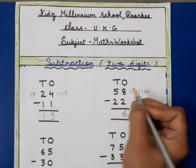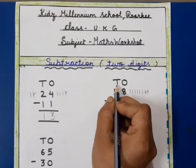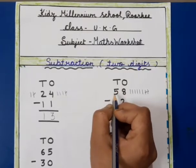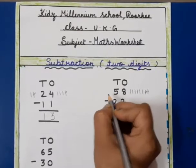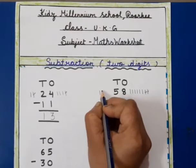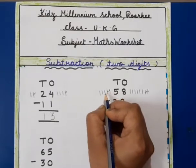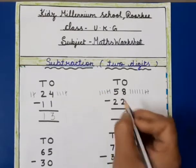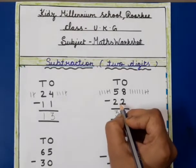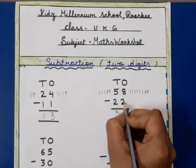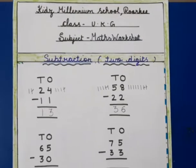Now this is tens. This is 5 and this is 2. We will draw five lines and cut two lines, and we will get three. We will write 3 here. When we subtract 22 from 58 we will get 36. Now next question.